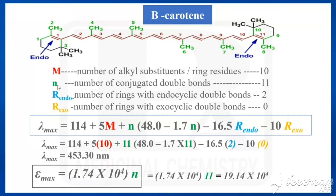Next we find n, the number of conjugated double bonds. Counting through the structure, there are 11 conjugated double bonds, so n = 11. For R_endo, the number of rings with endocyclic double bonds: there are 2 such rings, so R_endo = 2.